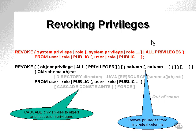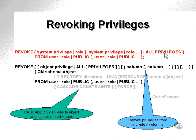The revoke command is used to revoke privileges from users. Unlike the grant command, which states grant privilege to user, the revoke command does it the opposite way around and says revoke privilege from user. We have revoke system privilege and we have revoke object privilege. System privileges are revoked from users, and object privileges are also revoked from users as applied to a particular object within a particular schema.